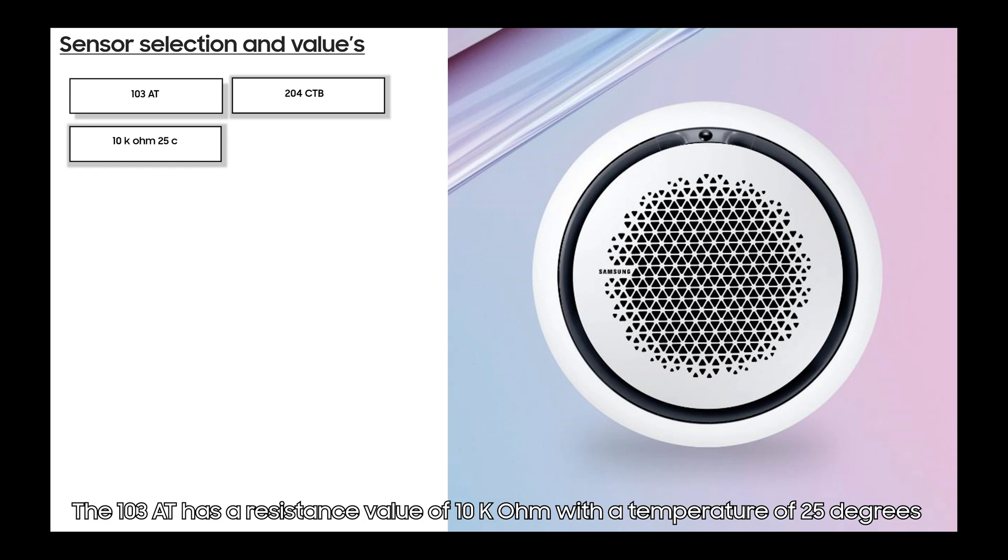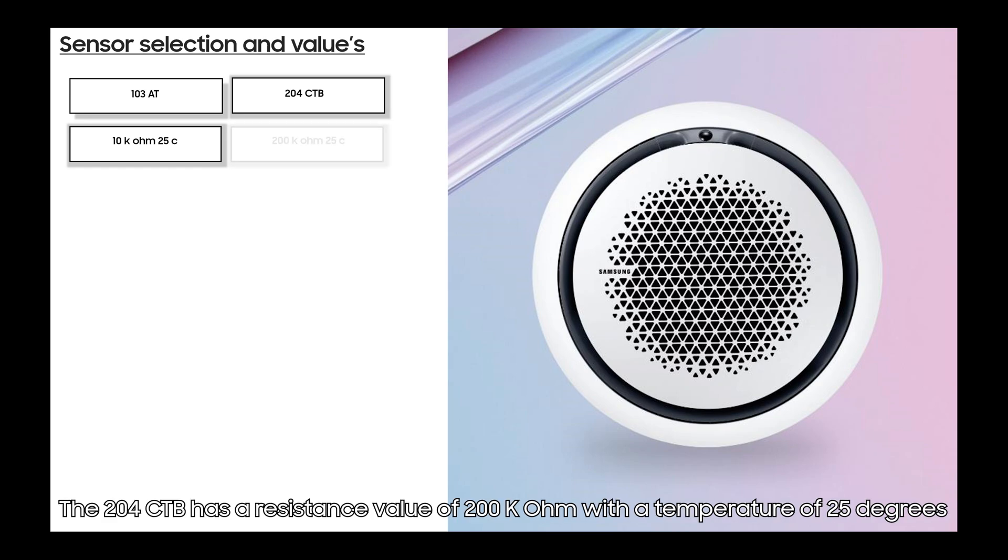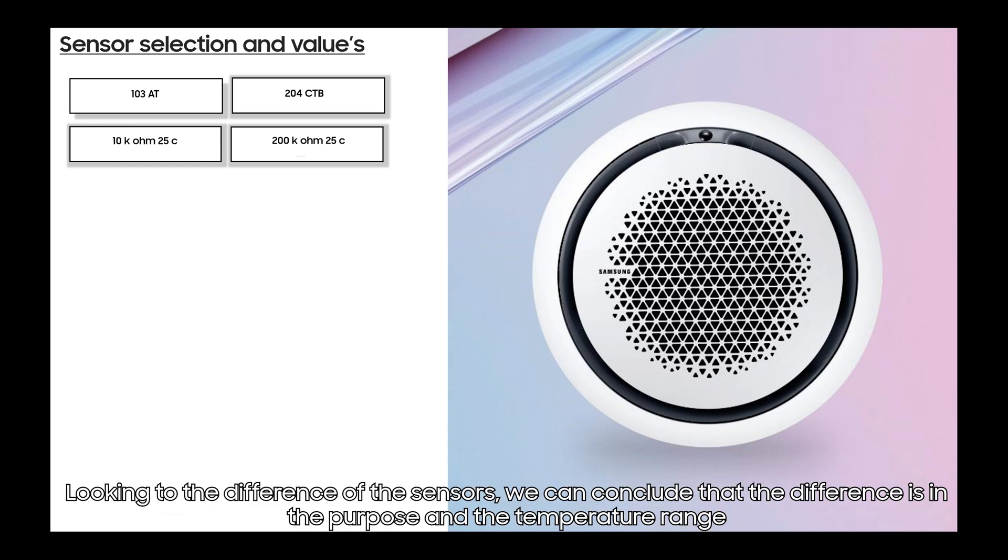The 204 CTB has a resistance value of 200 kilo-ohms within a temperature of 25 degrees. Looking at the difference of the sensors, we can conclude that the difference is in the purpose and in the temperature range.